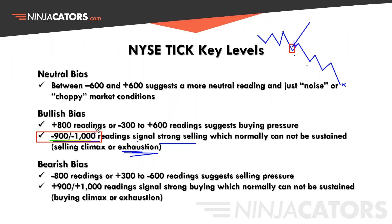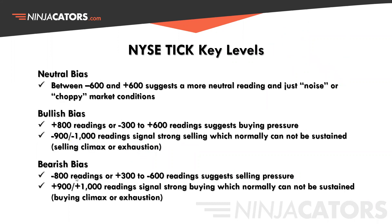For a bearish bias in a downtrend, you'll typically see minus 800 readings, or the tick pretty much range-bound between plus 300 and minus 600, with the NYSE tick trading mostly below the zero line. And again, when you get a plus 900 or plus 1,000 reading in an uptrend during a sustained move, that typically results in exhaustion.